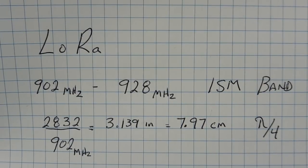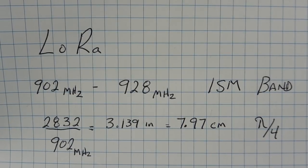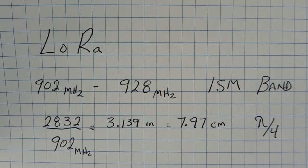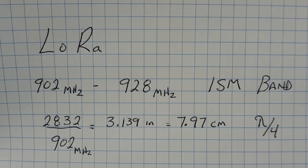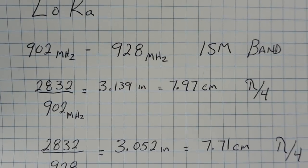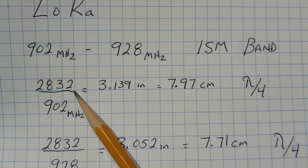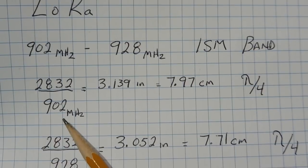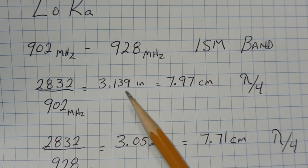Here is the formula for calculating the lengths of the radials and the radiator for the 902 megahertz to 928 megahertz ISM radio band. So we'll start at the low end, at 902 megahertz, so we take 2832 divided by 902 megahertz, we get 3.139 inches, that equals 7.97 centimeters.